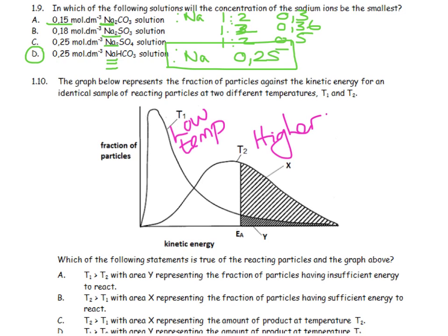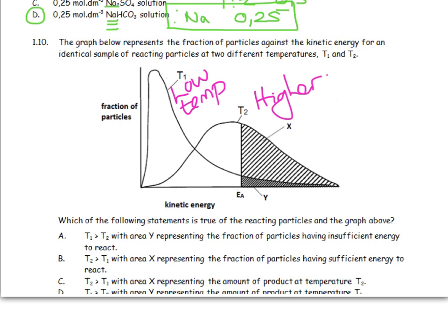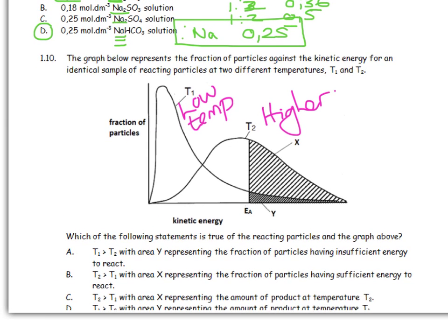So that would be either B or C. And area X represents the fraction of particles having sufficient energy to react. Well, that's the number of particles that have enough energy above activation energy. So that is true. B is my right answer.